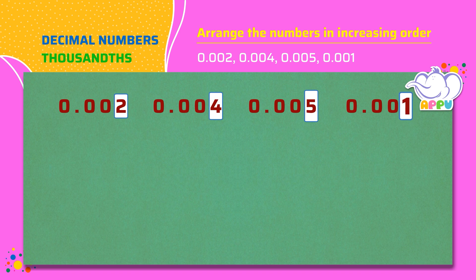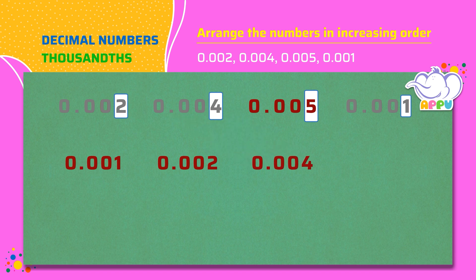Here 1 is the smallest. So we write 0.001. Next smallest number is 2. So we write 0.002. Next smallest number is 4. So we write 0.004. And 0.005 is the last number.